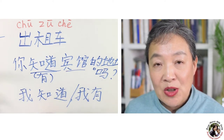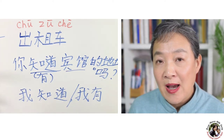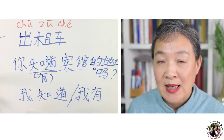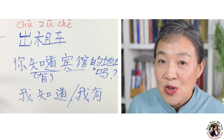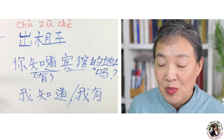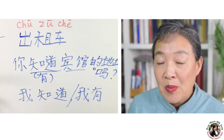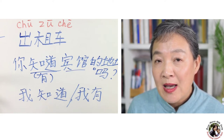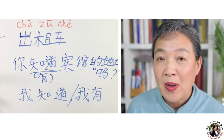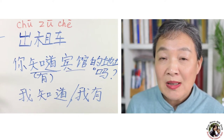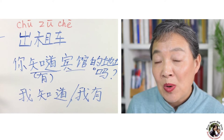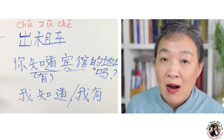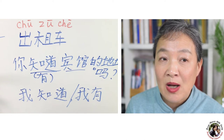I recommend you print out the address of wherever you go before taking the taxi, so you can show the driver the card or printout version. Because in Chinese, if you slightly change the tone it can become another character — you don't want to end up somewhere you didn't intend to go. Show the taxi driver a clearly printed card with the address.